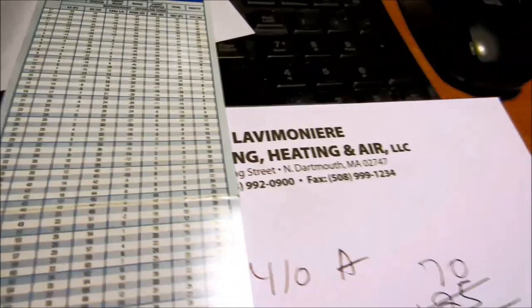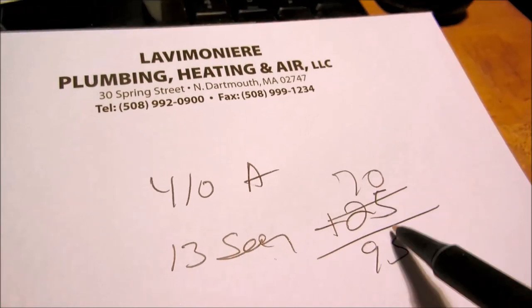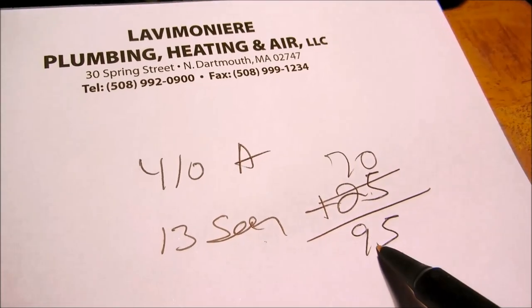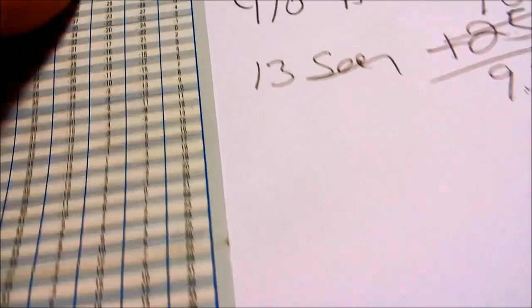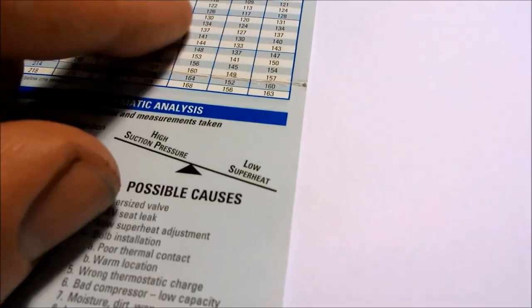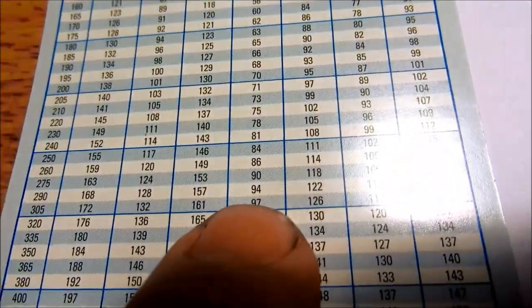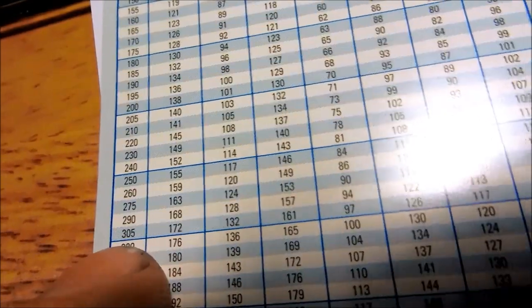Let's do the 410a. Say 410a 13 SEER, 70 degrees outside plus 25 would be 95. What should the head pressure be on a 410a system at 70 degrees ambient temperature? We're going to go down to 95 on 410a.